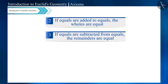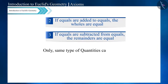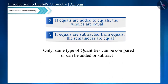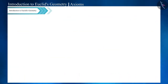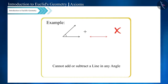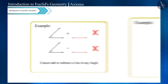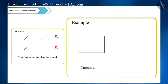According to the second and third axioms given by Euclid, we can say that only the same type of quantities can be compared, added, or subtracted. To understand this clearly, we will see some more examples — such as we cannot add or subtract a line with any angle, nor can we compare a square with any angle.